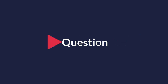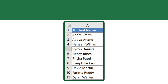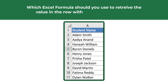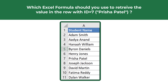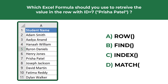Here's a question which tests your knowledge of modern Excel formulas. You are presented with a list of student names in column A and need to decide which Excel formula to use to retrieve the value of the row with ID 7. The value in this row is Prisha Patel. The four choices are: choice A, ROW; choice B, FIND; choice C, INDEX; and choice D, MATCH.